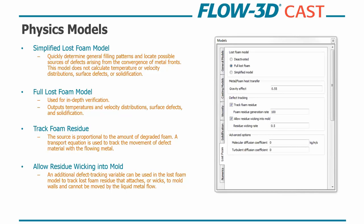So we've selected our material, and then we're going to look at the physics models. So there's two lost foam models that we have built into Flow 3D. First is the simplified lost foam model. And this is to quickly determine the general filling pattern and just get an idea of the filling behavior, locate possible sources of defects arising from convergence of metal fronts. Important to know that this doesn't calculate temperature velocity distributions, won't track surface defects, and you're not going to track any early solidification that might happen. So purely just a filling, a quick check. Maybe if you're running through a lot of iterations on a design, this would be a good way to kind of narrow those options down. And so then after that, we have a full lost foam model. This is used for in-depth verification. And so it's going to output temperature and velocity distributions for solidification and early solidification that might happen. And within these, you can have the option to track foam residue, which is highly important in this process.